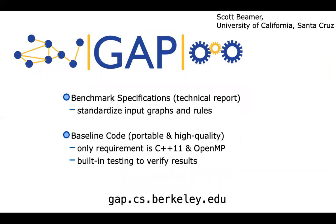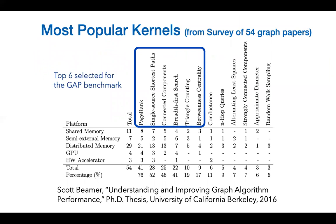The GAP benchmark suite is from Scott Beamer, now at UC Santa Cruz. There's a specification online where you can download the graphs, run rules, and baseline code — which is really high quality, picked over by many people. It requires just C++ and OpenMP, so you can run it on just about any CPU platform. You can get it at gap.cs.berkeley.edu. Scott selected the benchmarks by surveying 54 graph papers and ranking the most commonly found kernels.